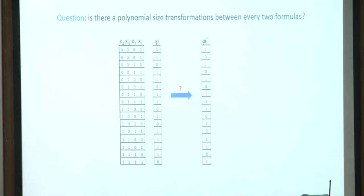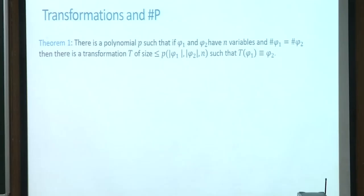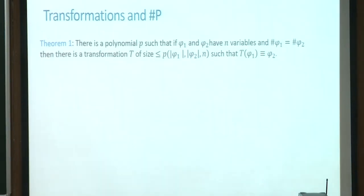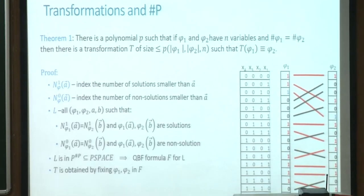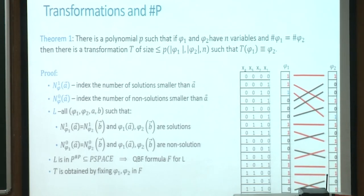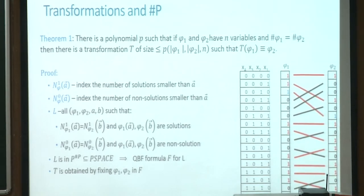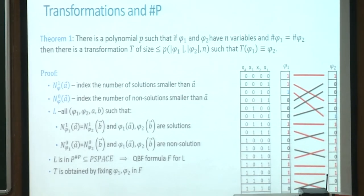We do have a theorem. There is a polynomial P such that if P1 and P2 are two Boolean formulas with the same number of variables and the same number of solutions, then there is a transformation of polynomial size such that T(P1) is logically equivalent to P2. The catch is that T is allowed to have alternations — that is why what we have is ultimately a QBF formula.